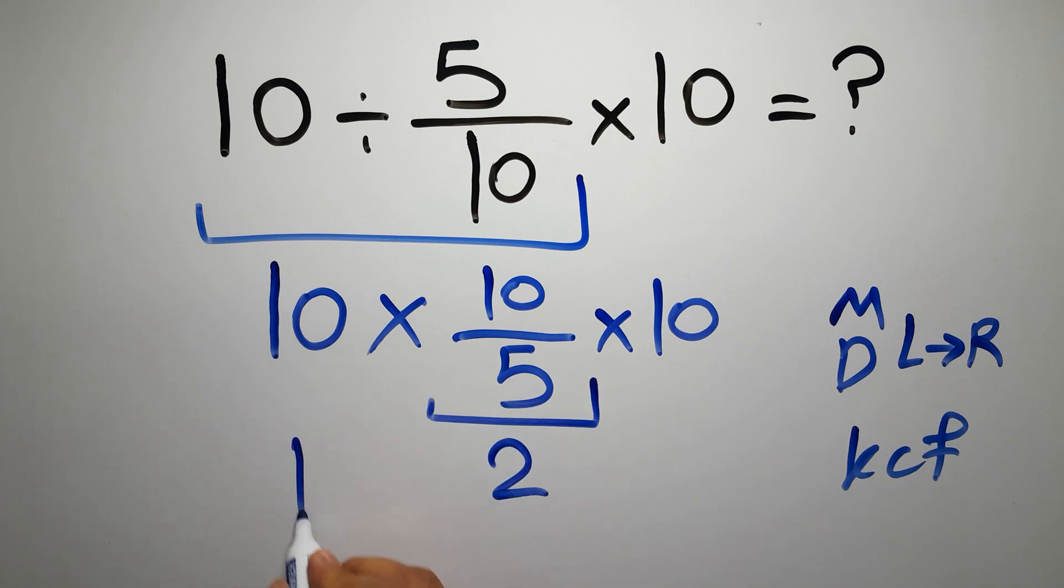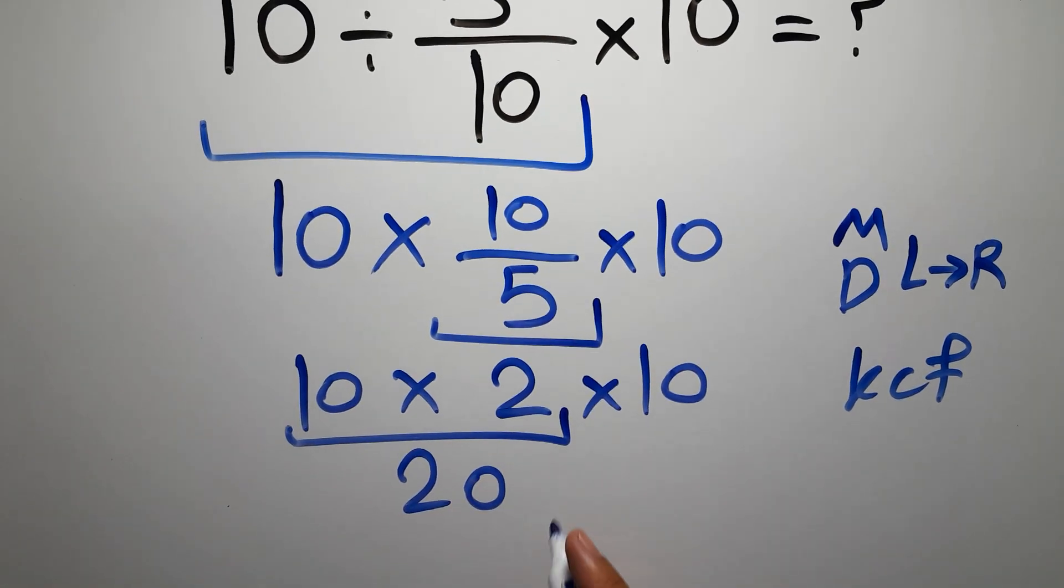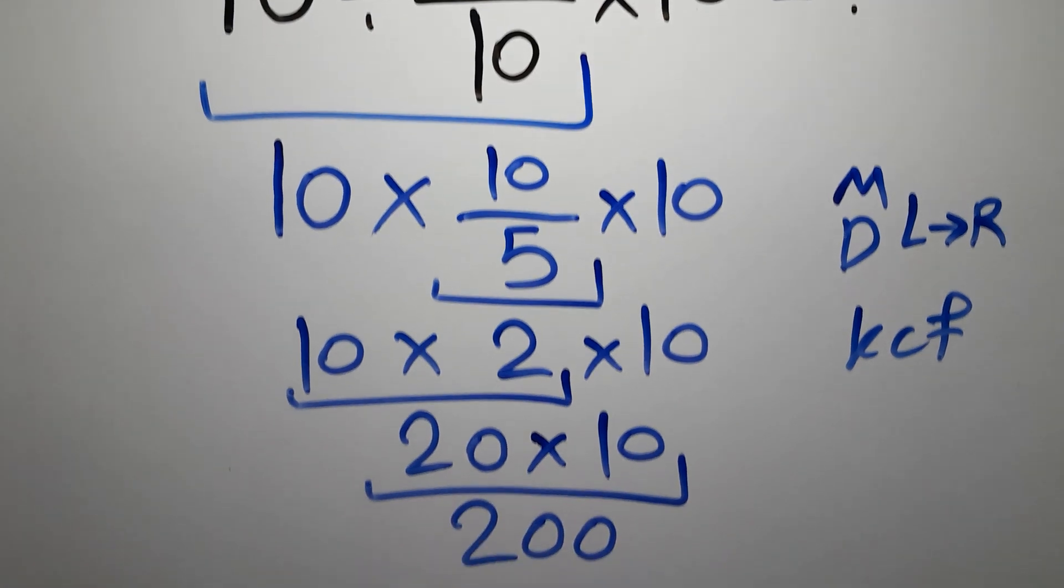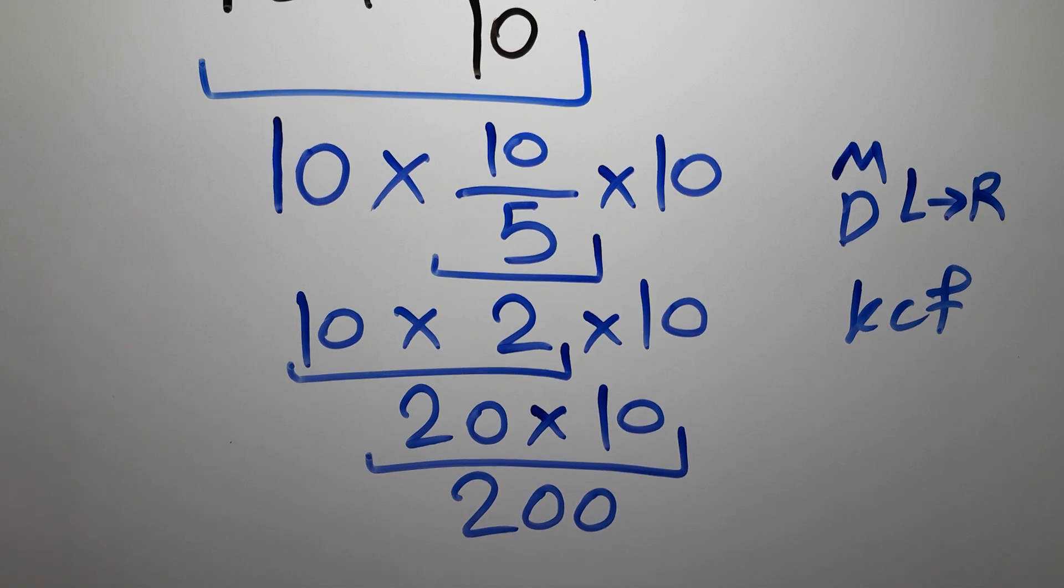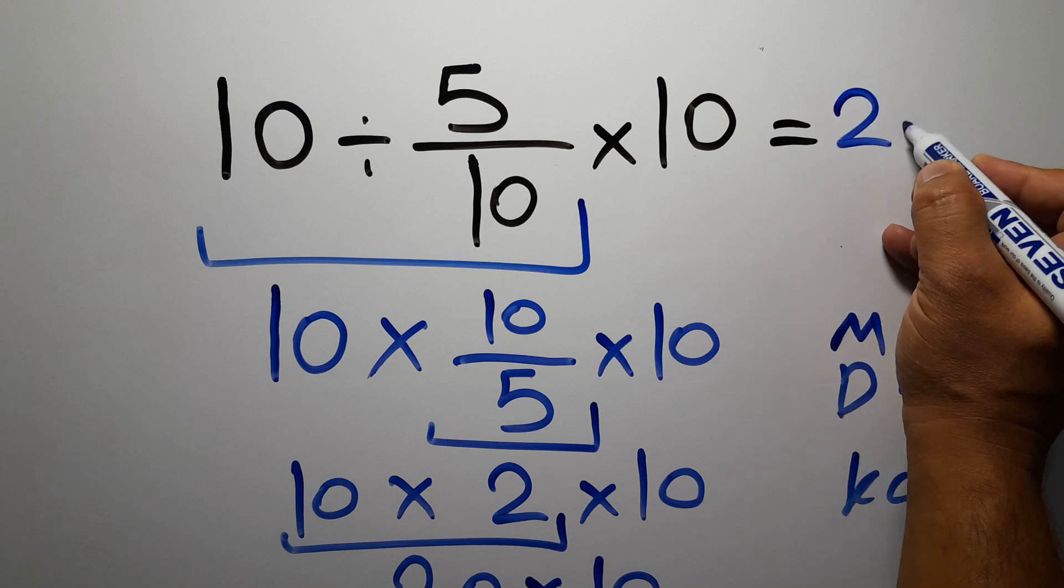So we have 10 times 2 and times 10. 10 times 2 gives us 20, and 20 times 10 is just 200. And this is our final answer to this problem. The correct answer is 200.